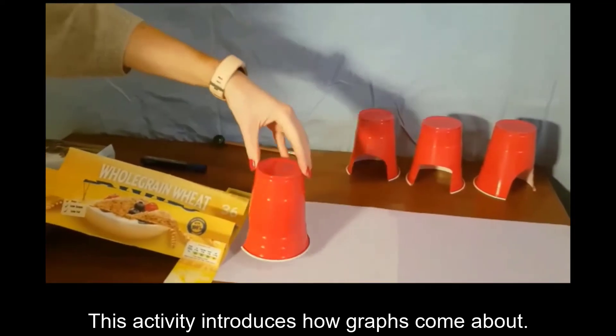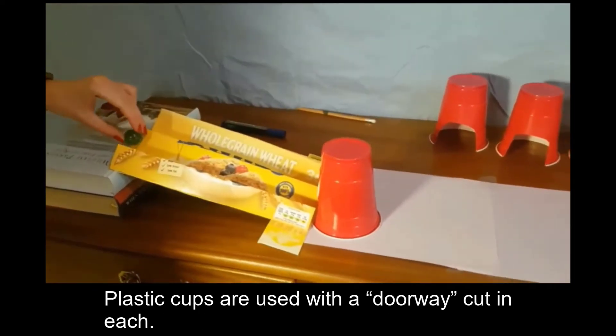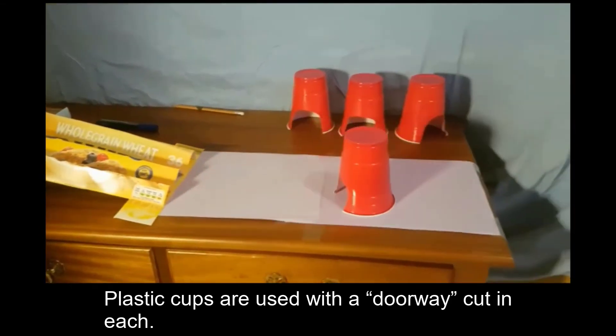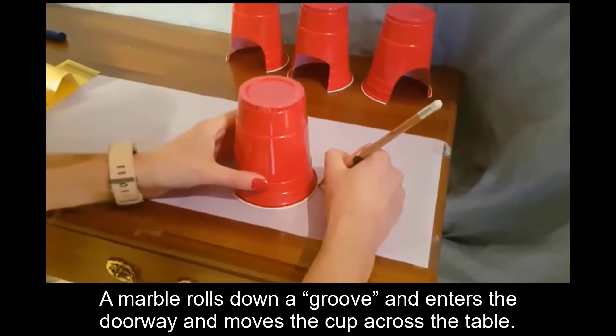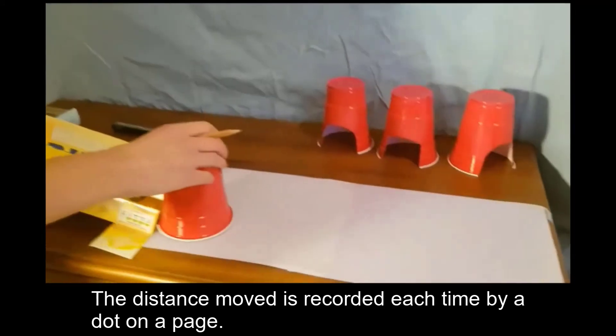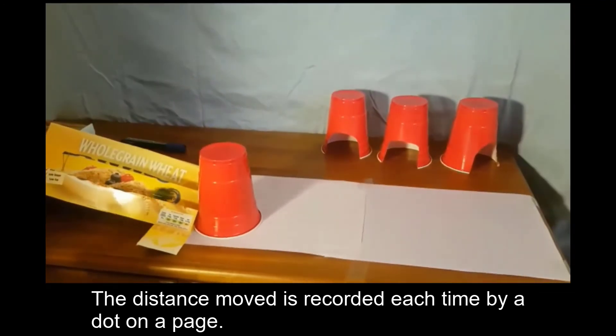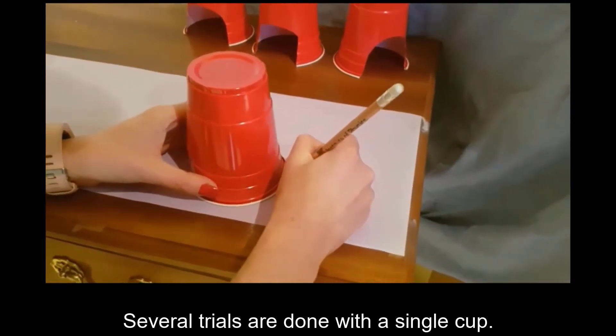This activity introduces how graphs come about. Plastic cups are used with a doorway cut in each. A marble rolls down a groove and enters the doorway and moves the cup across the table. The distance moved is recorded each time by a dot on a page. Several trials are done with a single cup.